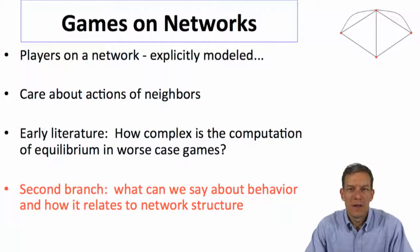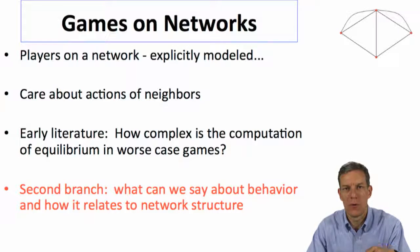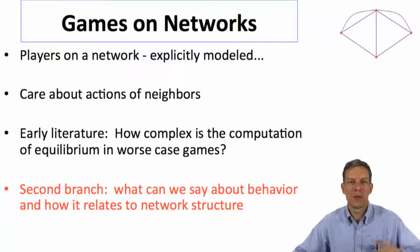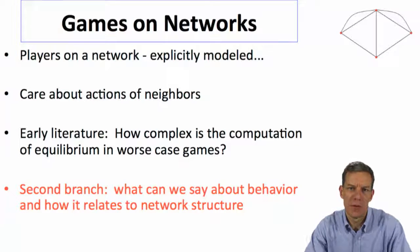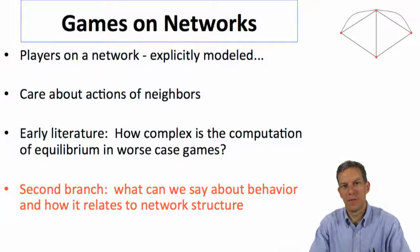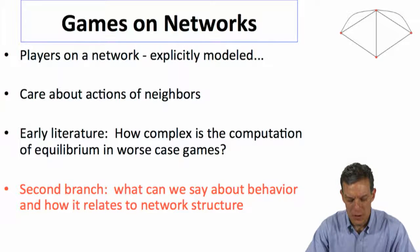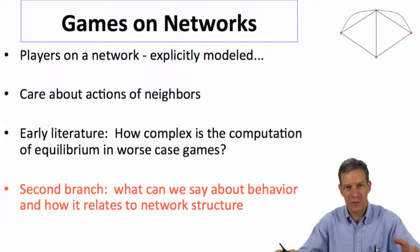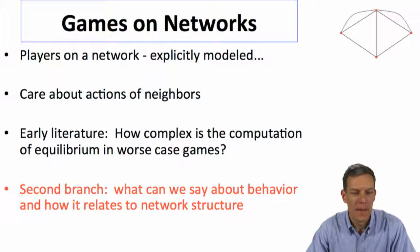Okay, so the idea here is there's going to be different individuals on a network, they're each making decisions, and you care about the actions of your neighbors. The early literature on this came out of the computer science literature, and what it was really interested in was how complex is the computation of equilibria in these settings in worst case games. So how hard would it be for a computer to actually find an equilibrium of one of these games in situations where there might be a lot of, in the case where nature was making it as hard as possible for you to find an equilibrium.